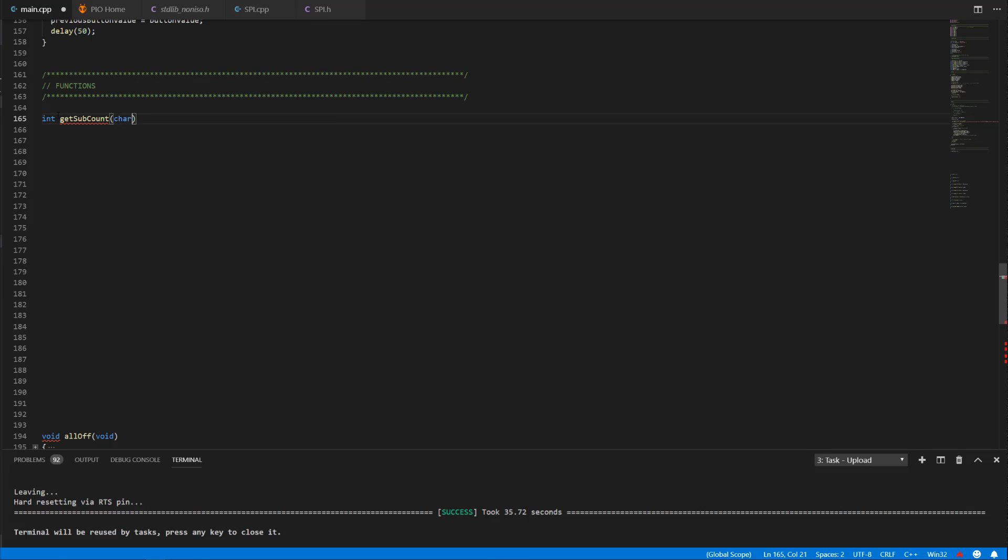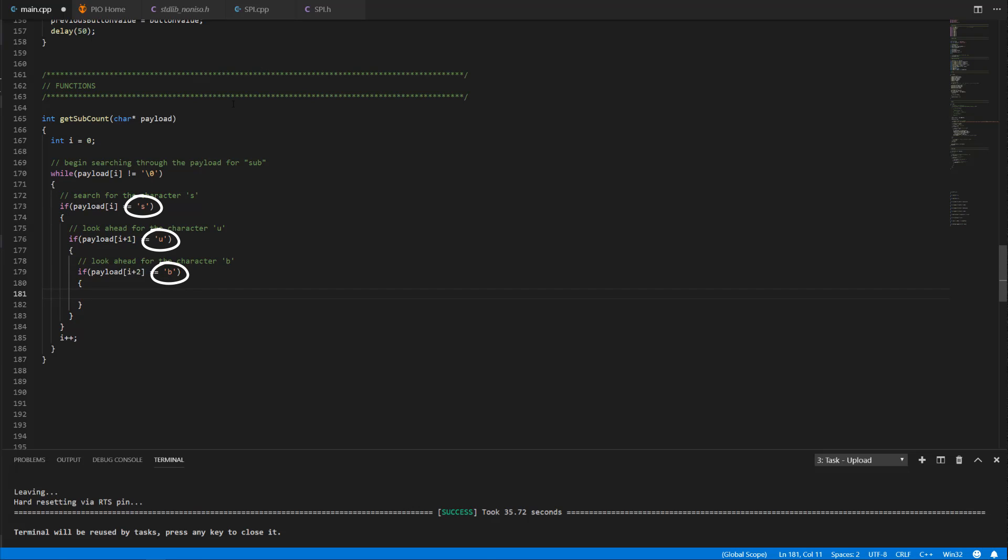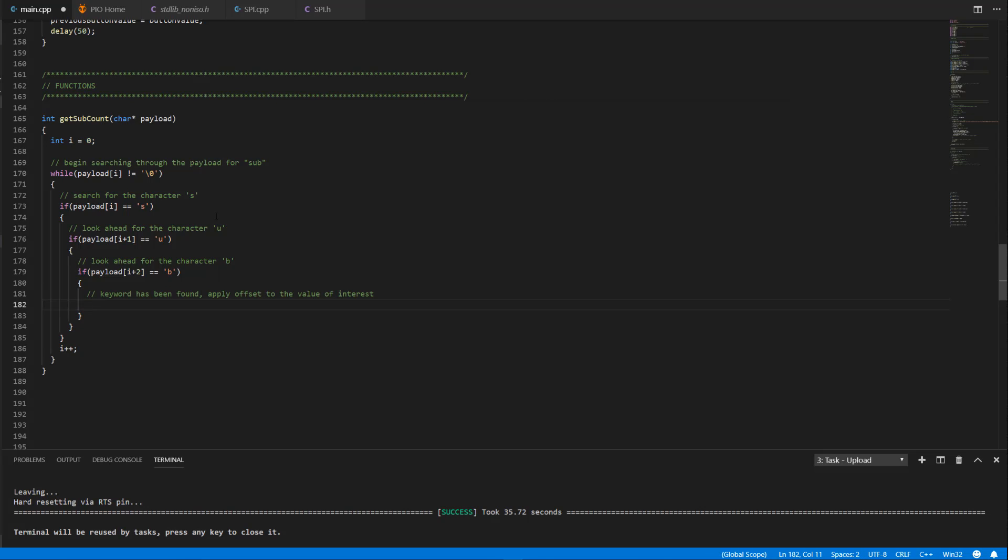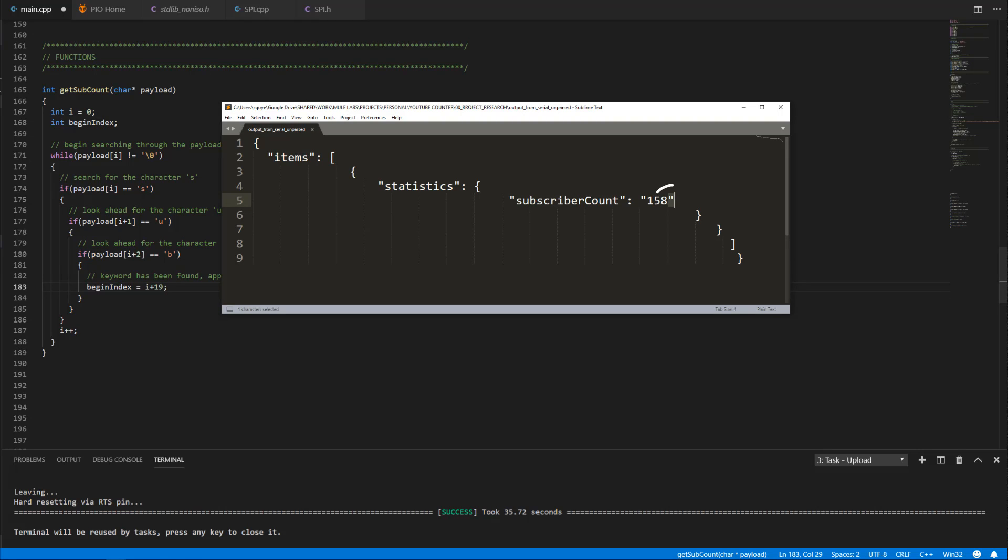The argument to this function will be a pointer to the beginning of the data collected from the HTTP GET request, and the function will return an integer. To iterate through the array, I will be using a while loop that will continue to search until either the predetermined sequence of 'sub' is found or it reaches the null character, indicating that it's at the end of the array. I realize that this many nested ifs is bad practice—let me know in the comments if there's a better way of doing this. If the character sequence is found within the array, it's then just a matter of applying a known offset to get to the index where the actual subscriber count begins. In this case, an offset of 19 characters from the character 's' in 'subscriberCount' will get us to the starting index. Next we'll need to use the closing double quote as a delimiter to know when we've reached the end of the subscriber count value.